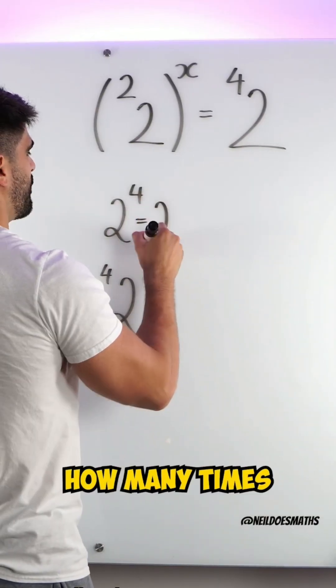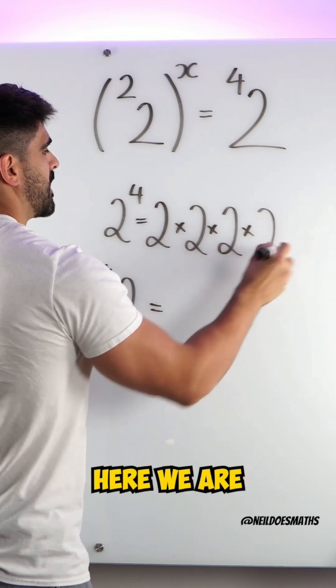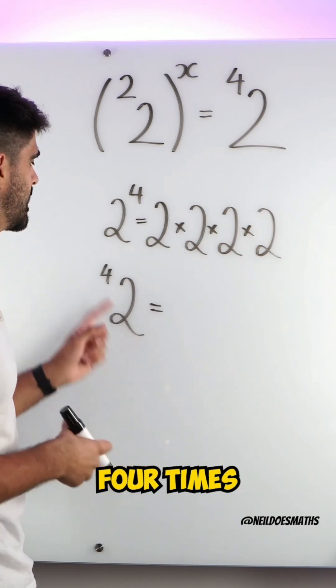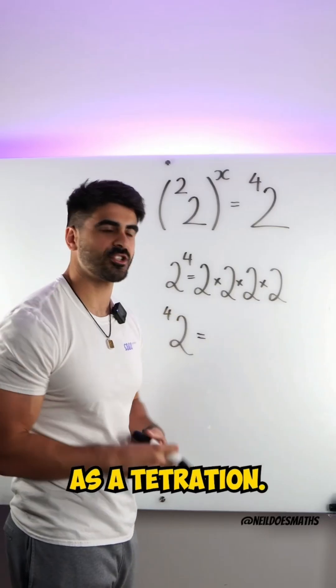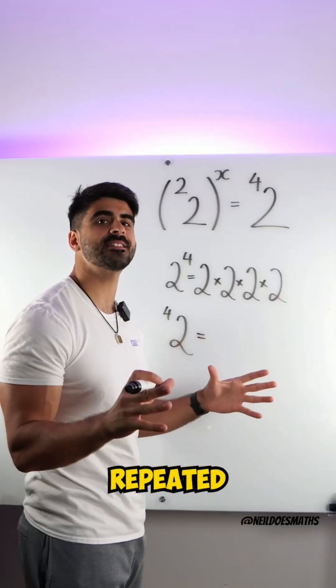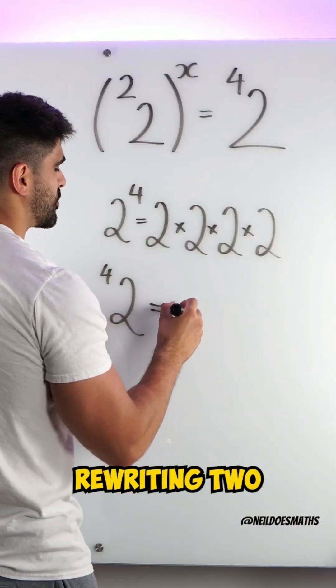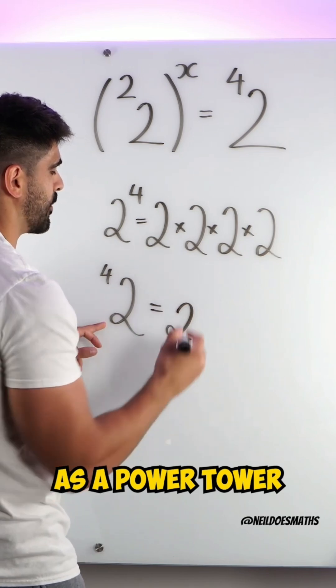Powers tell us how many times we are multiplying the base number together. Here we're multiplying 2 by itself 4 times. This is known as a tetration. Tetrations are power towers, repeated exponentiation. So we're rewriting 2 as a power tower.